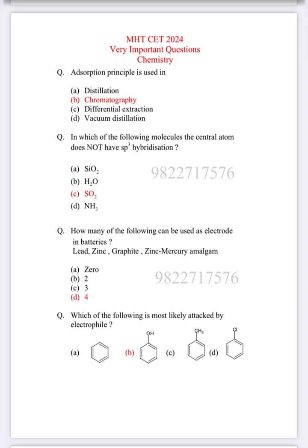In which of the following molecules does the central atom not have sp3 hybridization? Options: SO2, H2O, and NH3. These three have sp3 hybridization but SO2 has sp2 hybridization. So C is the correct answer.